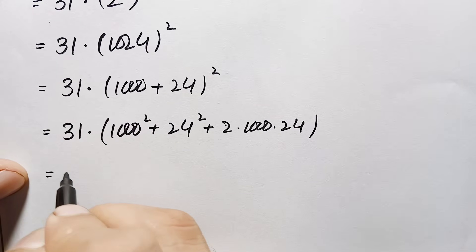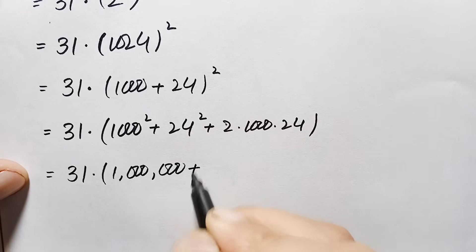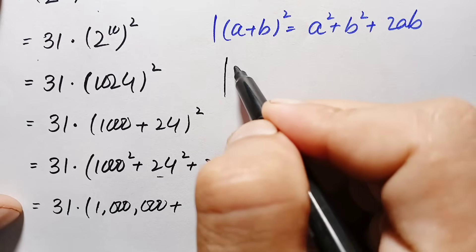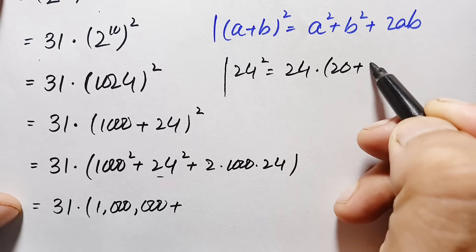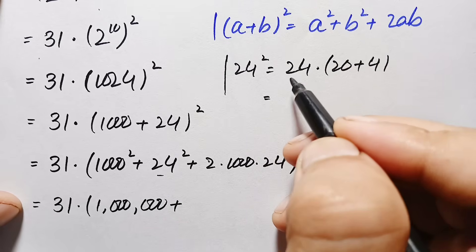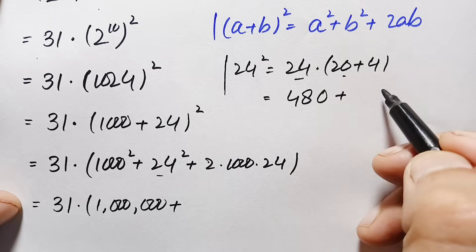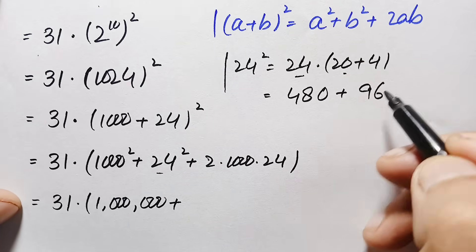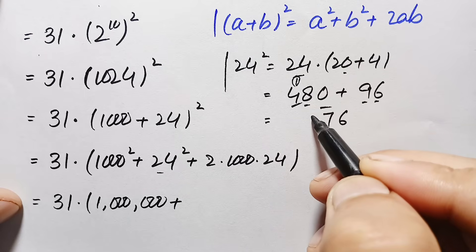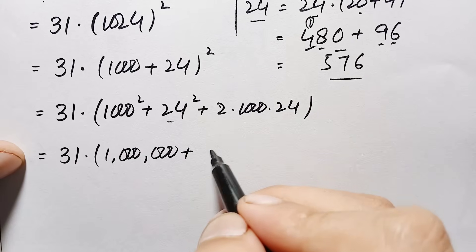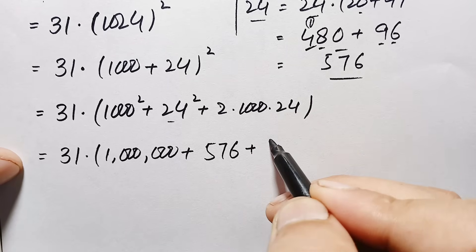We simplify each term: 1000 squared is 1,000,000. For 24 squared, we compute 24 times 24, writing the second 24 as 20 plus 4: 24 times 20 is 480, and 24 times 4 is 96. Adding 480 plus 96 gives 576. So 24 squared equals 576. Then 2 times 1000 times 24 is simply 48,000.